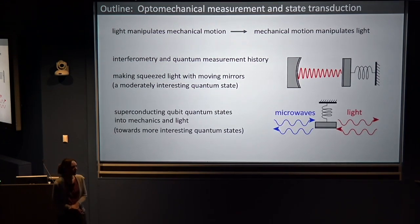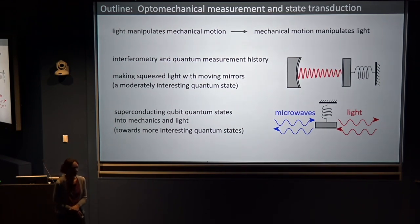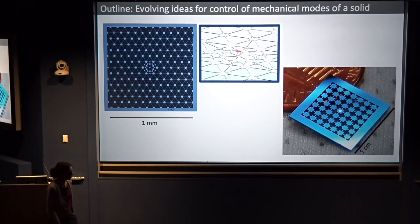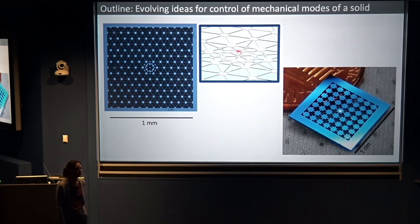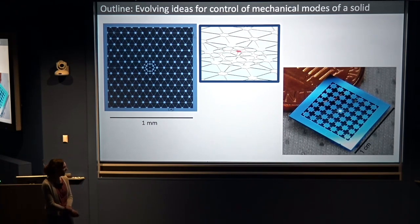I'll also talk about more recent work where we're trying to take superconducting quantum bits, couple them to these mechanical objects, couple light also to those mechanical objects, and hence make a way to take a superconducting qubit single photon and translate it to optical light — one of the tricky problems in quantum systems right now. At the end of the talk, I'll discuss making cool mechanical objects, putting them in structures that create an acoustic band gap to isolate them from the environment more and more.